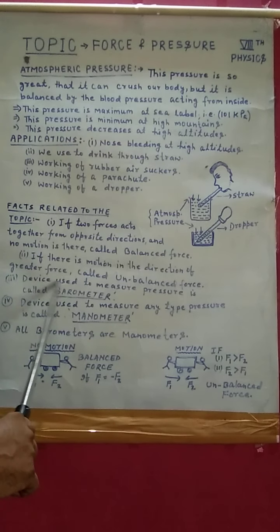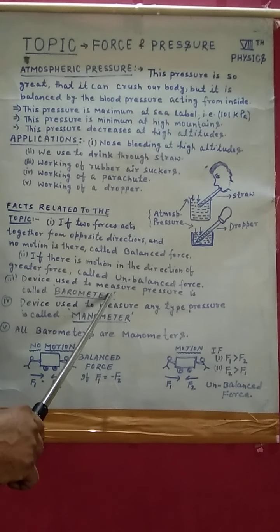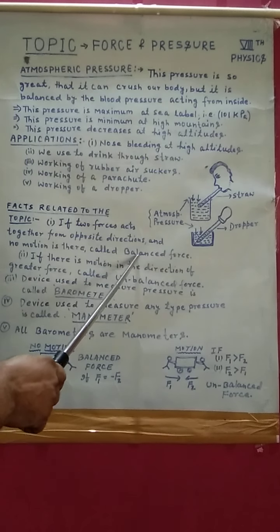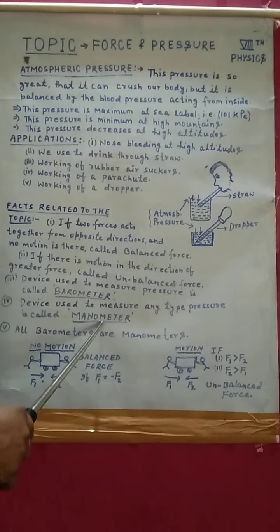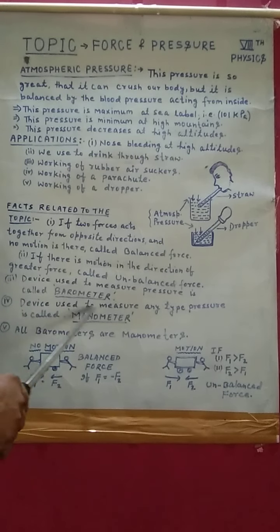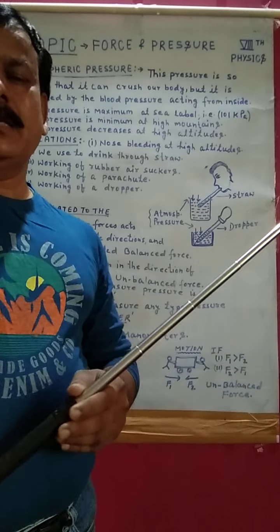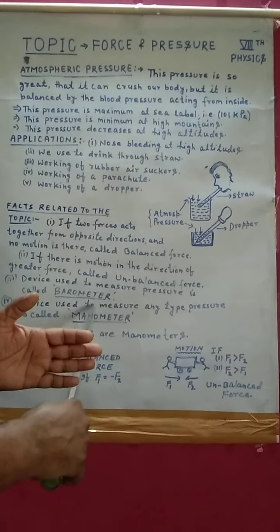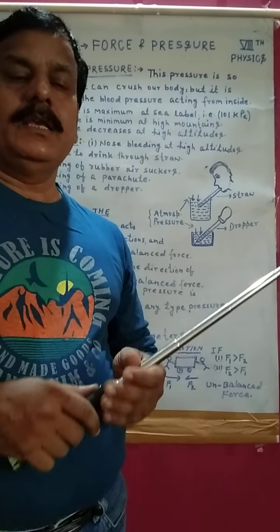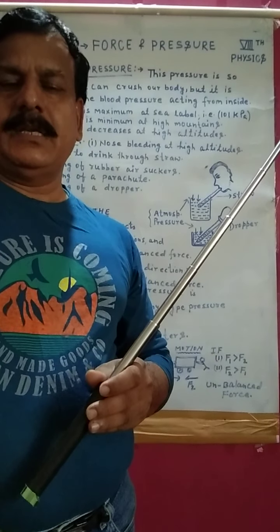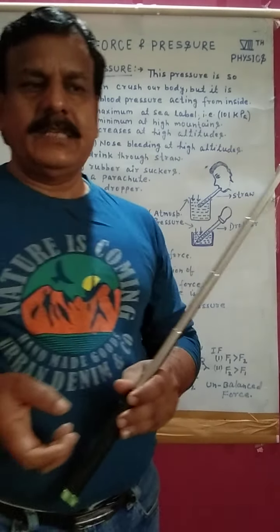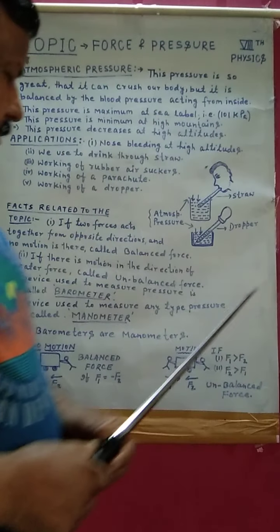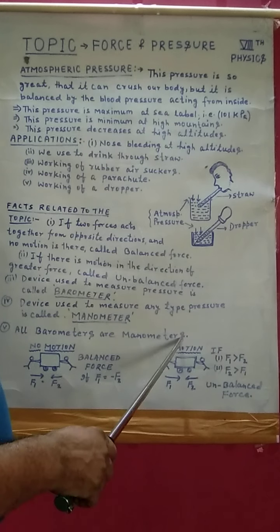The device used to measure pressure is called a barometer. We have learned about pressure in this chapter. One more device is called a manometer — it is used to measure any type of pressure, including pressure exerted by air, gases, or water. All barometers are manometers, but a manometer is the broader category. Barometer is specifically used to measure air pressure around us, while manometer can measure any type of pressure.